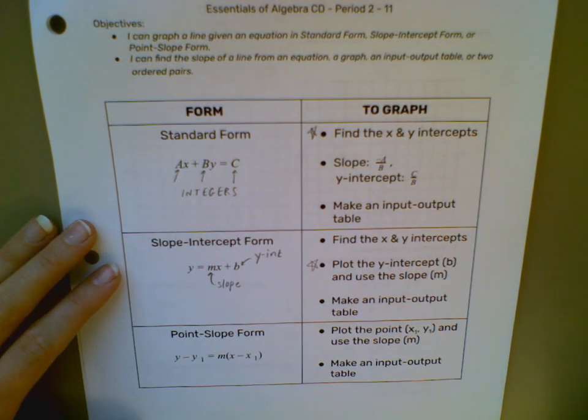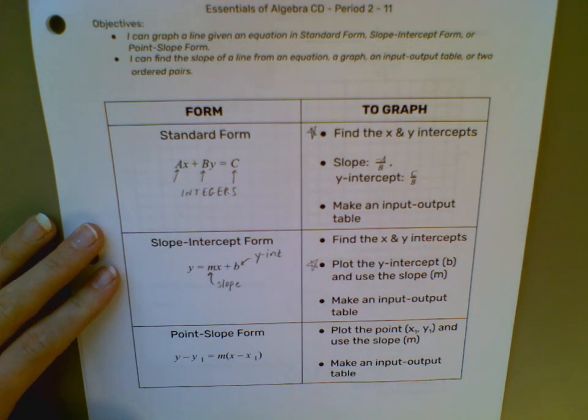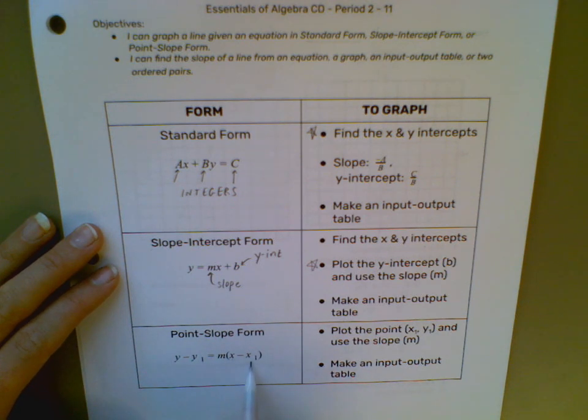Now let's take a look at point-slope form. Point-slope form will look like this: Y minus a number, call that number Y1, equals M times X minus another number. That second number will be X1.